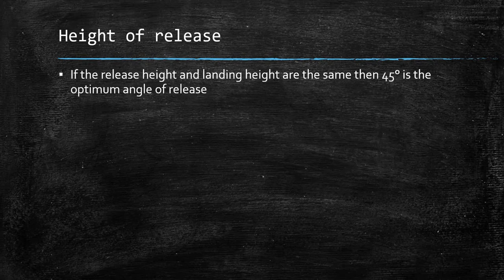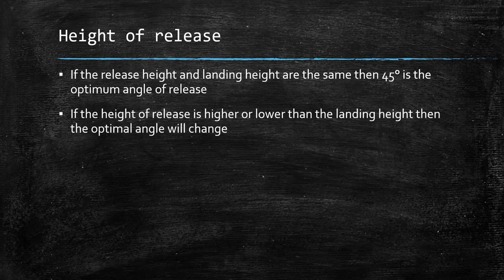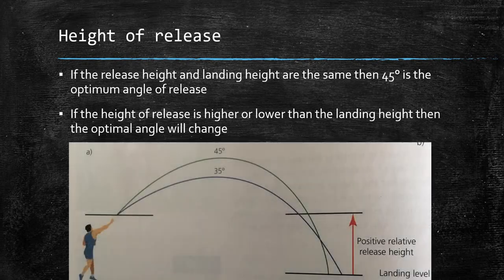The third factor is height of release. If the release height and the landing height are the same, then 45 degrees is the optimum angle of release. However, if the height of release is higher or lower than the landing height, then the optimal angle will change. For example, with a javelin thrower, the javelin is released from the hand but lands on the ground, so the release height is higher than the landing height. Therefore the optimal angle needs to be slightly lower — around 35 degrees rather than the general 45 degrees.